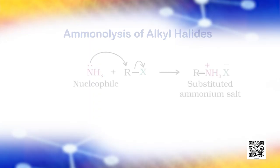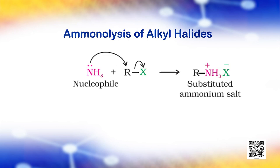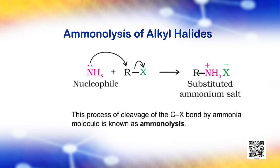The carbon-hydrogen bond in alkyl or benzyl halides can be easily cleaved by a nucleophile. Hence, an alkyl or benzyl halide on reaction with an ethanolic solution of ammonia undergoes nucleophilic substitution reaction in which the halogen atom is replaced by an amino, that is the NH2 group. The process of cleavage of the carbon-halogen bond by ammonia molecule is known as ammonolysis. The reaction is carried out in a sealed tube at 373 Kelvin.